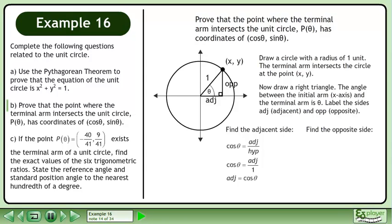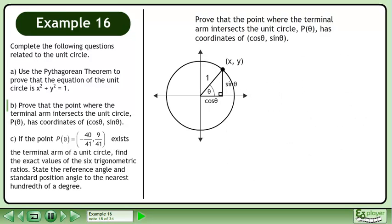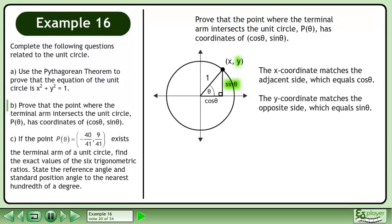Now find the opposite side using sin theta equals opposite over hypotenuse. The hypotenuse is 1 since the radius of the unit circle is 1. Cross multiply to get opposite equals sin theta. In the triangle, replace the adjacent side with cos theta and the opposite side with sin theta. The x-coordinate matches the adjacent side with cos theta, and the y-coordinate matches the opposite side with sin theta. Therefore, the point xy is equivalent to cos theta, sin theta.